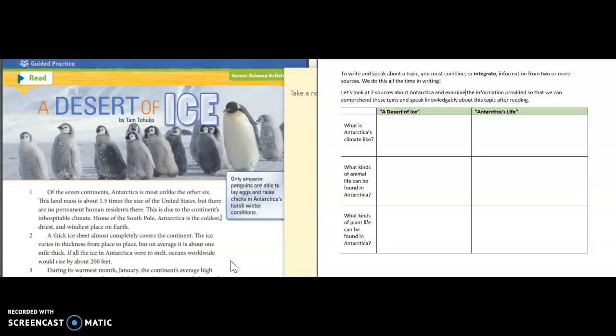There's kind of a lot going on right here, don't get overwhelmed. There's a graphic organizer that we're going to work through today, and then you see one of my virtual post-it notes here and then the text. It is titled 'A Desert of Ice.' So this week in reading we're going to focus on how readers can integrate or combine information from two or more sources.